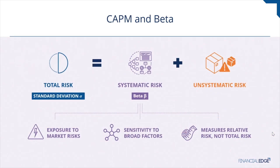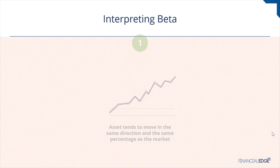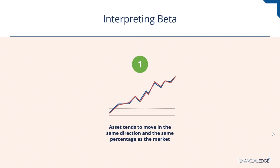CAPM only considers one aggregate metric of market risk, and that is beta. It assumes investors own diversified portfolios, which means they don't get rewarded for unsystematic risk as it should be diversified away. Beta tells us about one type of risk — market risk. It's not a measure of an investment's total risk, and a low or zero beta does not necessarily mean an investment has no volatility or risk on an absolute basis.